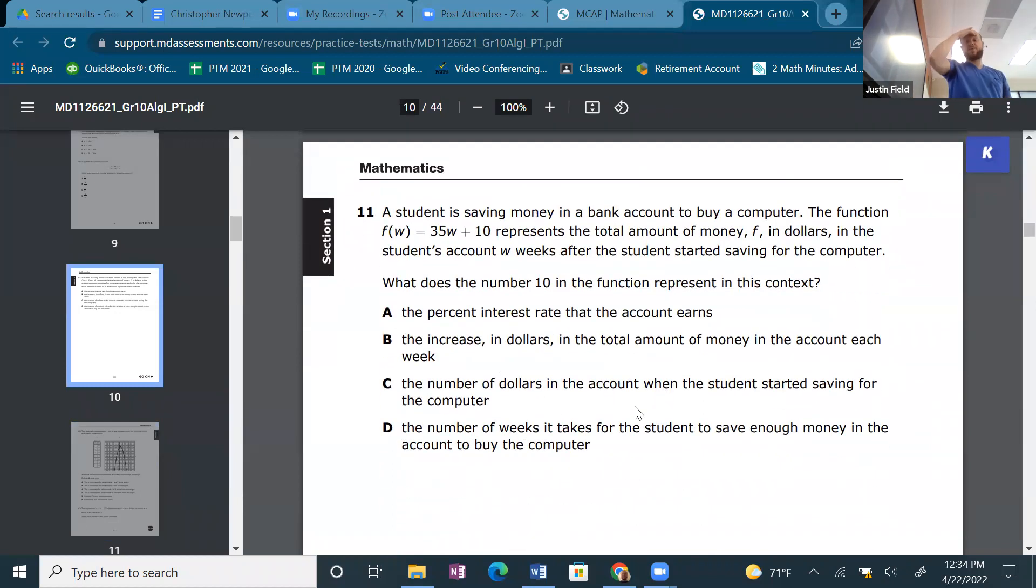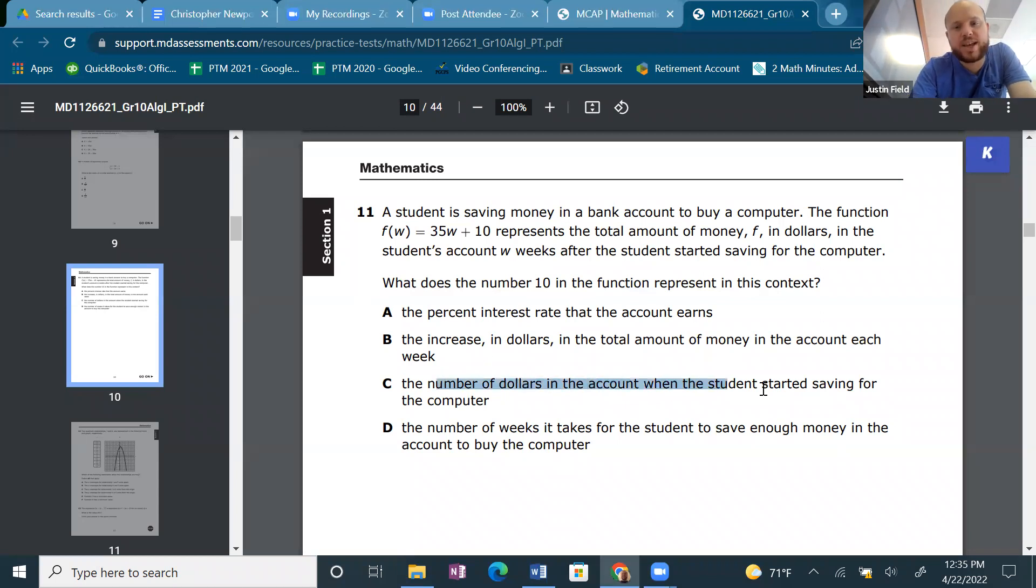A student is saving money in a bank account to buy a computer. The function f(w) = 35w + 10 represents the total amount of money, f, in dollars, in the student's account, w weeks after the student started saving for the computer. What does the number 10 in the function represent in this context? 10 is the y-intercept. It's an initial amount of whatever f(w) represents, which represents total money. f is money. So it's the initial amount of money that the student had before they started saving. And that is C. I see right there. The number of dollars in the account when the student started saving for the computer. The y-intercept.